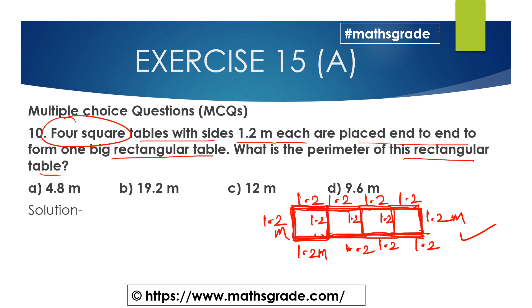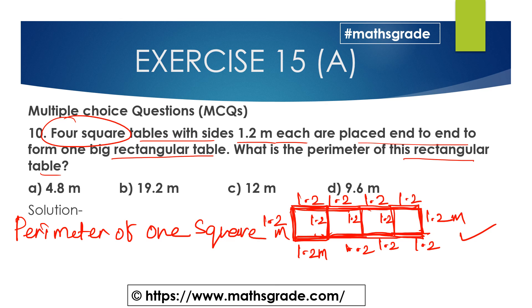The perimeter of one square is 4 × 1.2 meters = 4.8 meters.